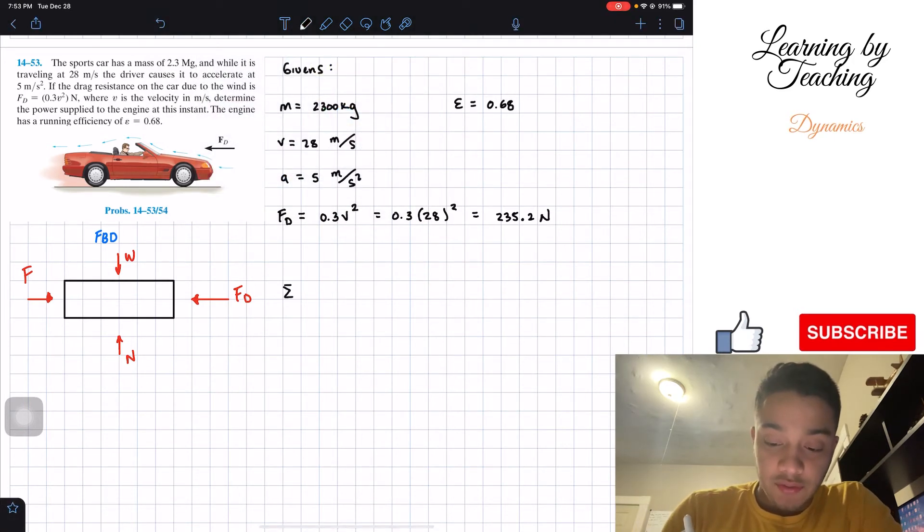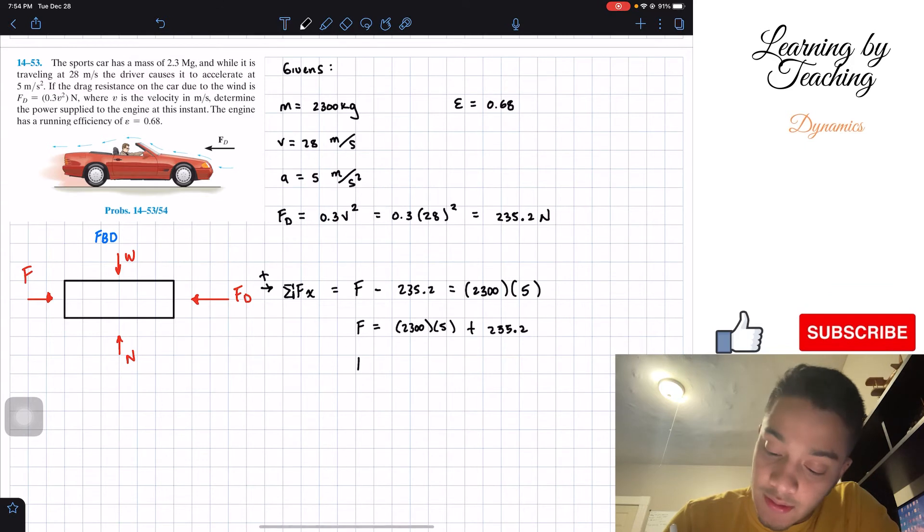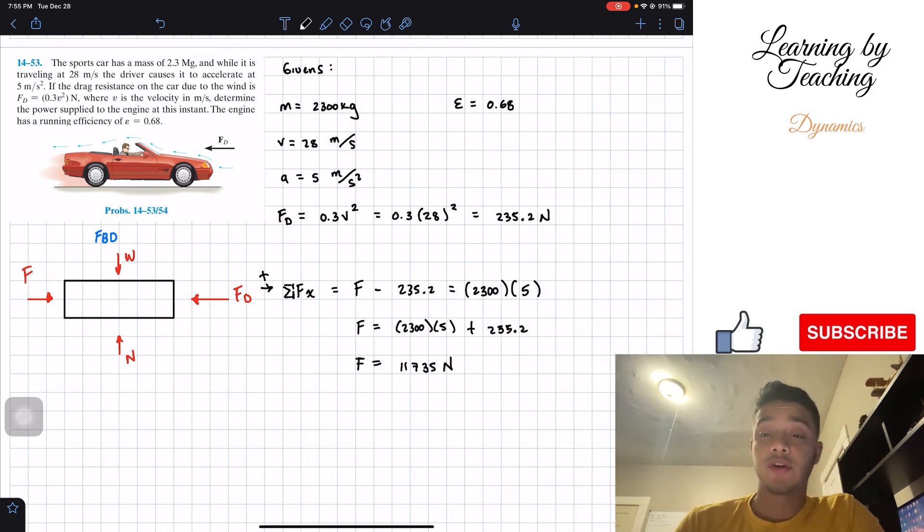Now that we have all that, we can perform a sum of forces in the x direction. We're going to assume that going to the right is positive. So we have our force F minus our dragging force, 235.2 newtons. This should be equal to my mass times acceleration, F equals ma. So our mass 2300 multiply by our acceleration which is 5 meters per second squared. If we solve for F, this will give me 11,735 newtons. So this is the force that we're driving our car.